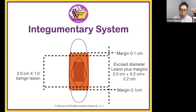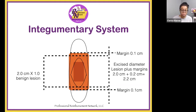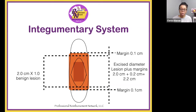Code 11423 is for excision, benign lesion, including margins, except skin tag, unless listed elsewhere — scalp, neck, hands, feet, genitalia — excised diameter 2.1 to 3.0 centimeters.